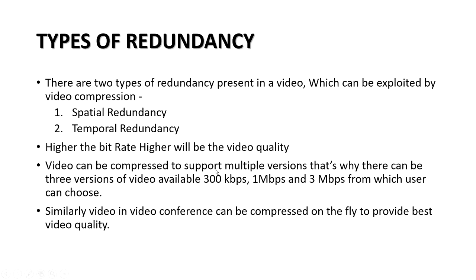Video can be compressed to support multiple versions. There can be three versions of video at 300 kbps, 1 Mbps, and 3 Mbps, from which the user can choose. For example, in YouTube there are several options like 144 kbps, 240 kbps, and so on. Similarly, video conferences can be compressed on the fly to provide the best video quality.